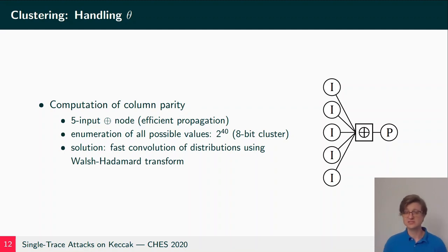Here we have the problem - the simplest way of combining all these informations is to enumerate all the inputs. If we have eight-bit clusters and five inputs, that would be 2 to the 40 possible input values, which is not really practical to enumerate. But here however there is a solution by using a fast convolution of the distributions using a Walsh-Hadamard transform.